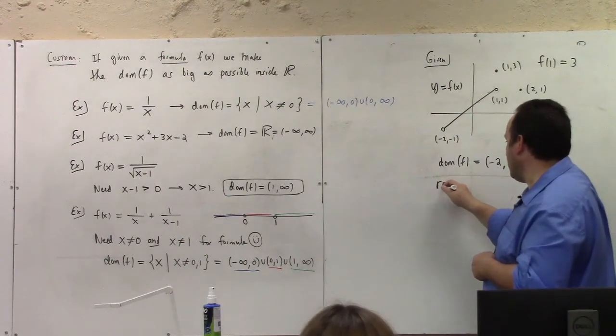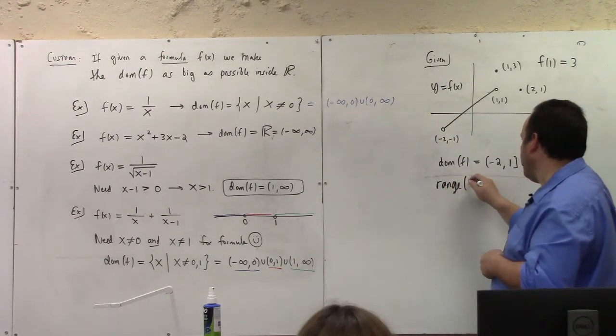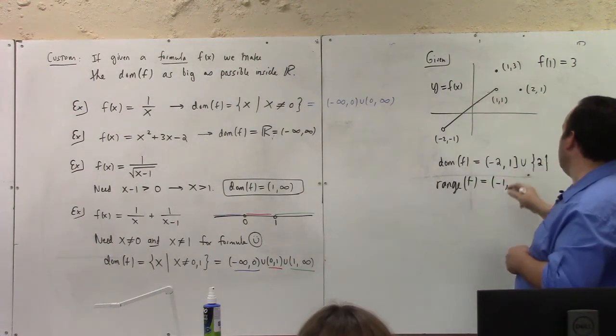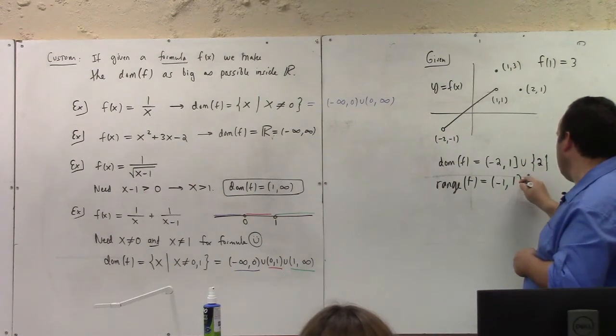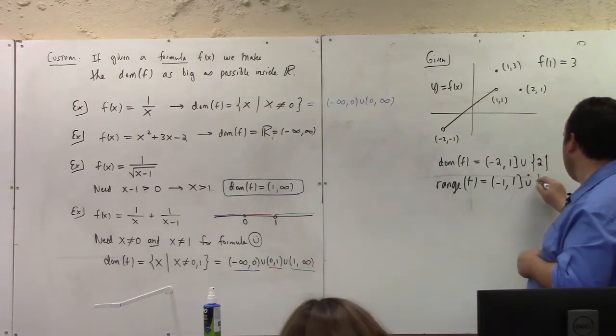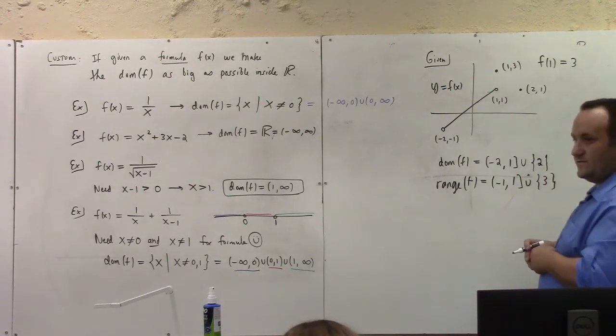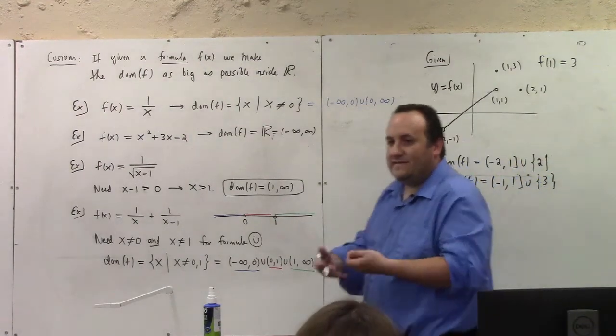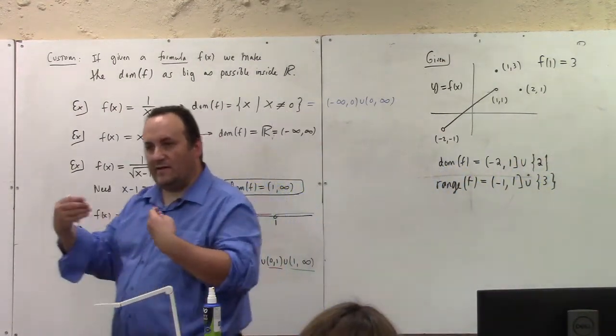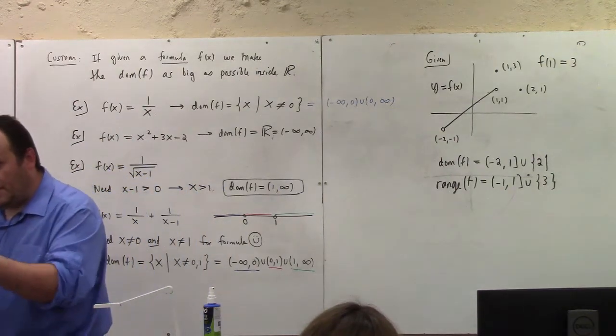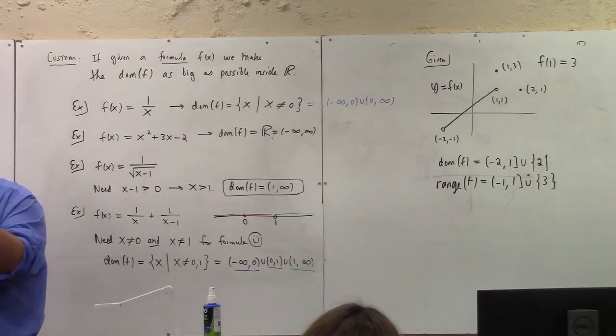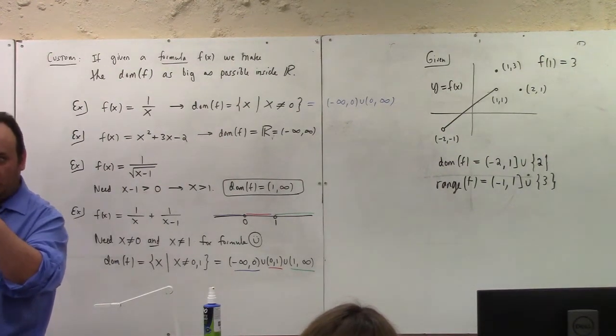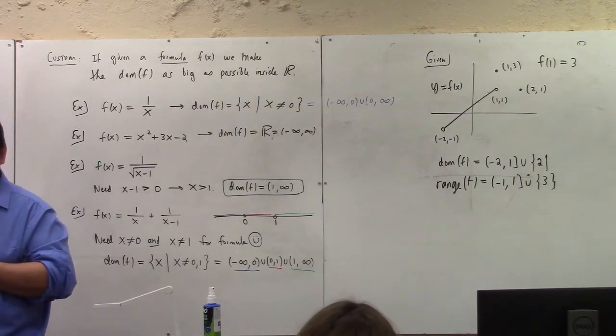The range is minus 1 up to 1 included unioned with 3. Those are the possible outputs. Those are the possible inputs. But, I think these are the easiest kind of questions because all you have to do is look at the graph and read from the graph possible inputs. Those are the x values it hits, possible outputs. So, those are the y values that the graph actually runs into. That's all there is to it.